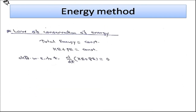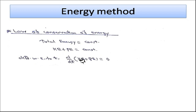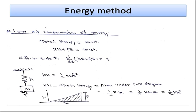Next we see how to obtain the natural frequency using the energy method. The law of conservation of energy states that the total energy of the system remains constant, meaning kinetic energy plus potential energy is constant at any time. If we differentiate the sum of kinetic energy and potential energy with respect to time, the derivative equals zero.